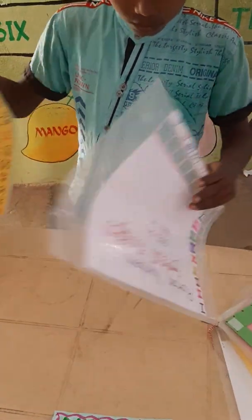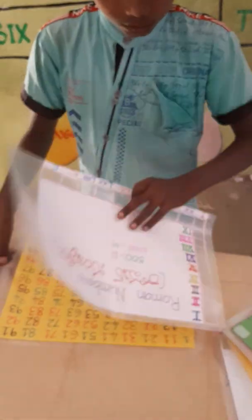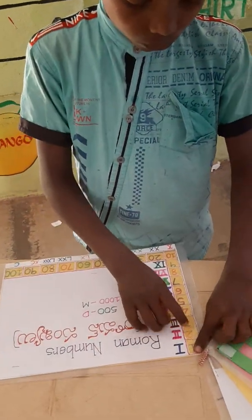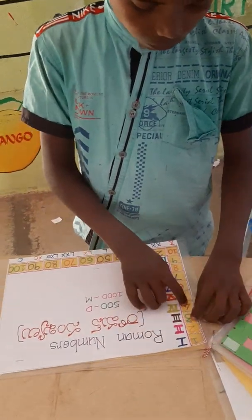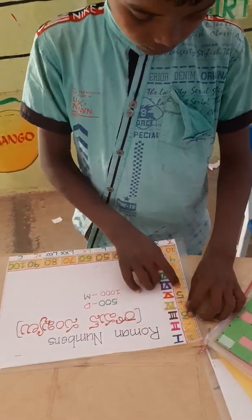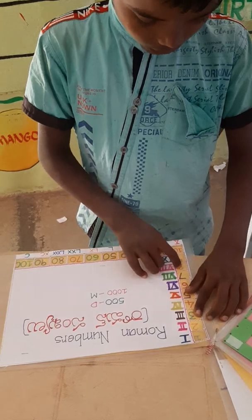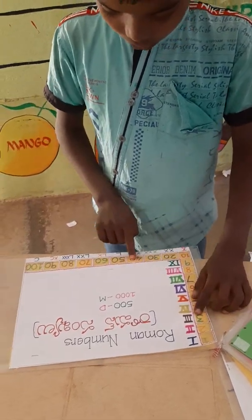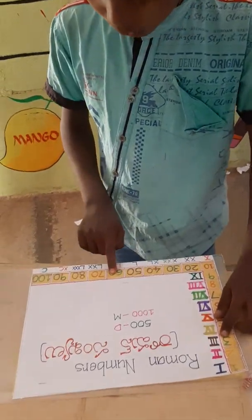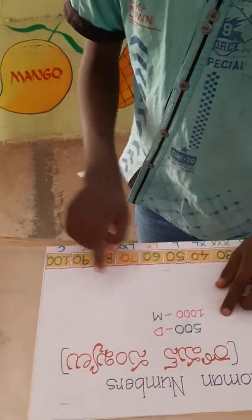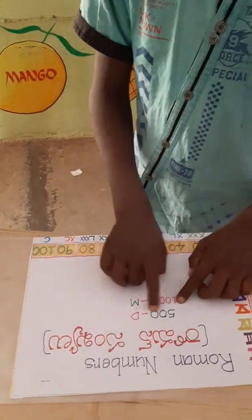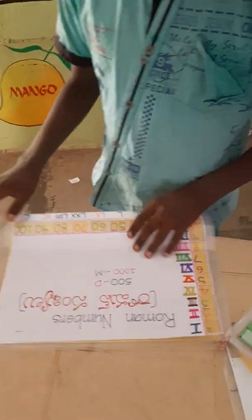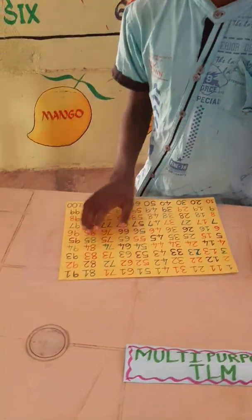Next, roman numbers. Like this: 1, 2, 3, 4, 5, 6, 7, 8, 9, 10, 20, 30, 40, 50, 60, 70, 80, 90, 100. And 500 D, 1000 M. Like this.